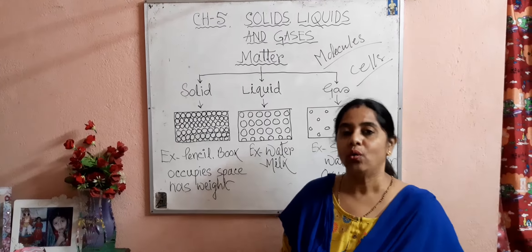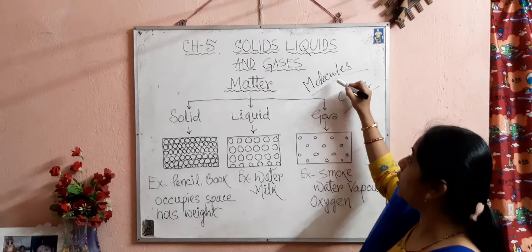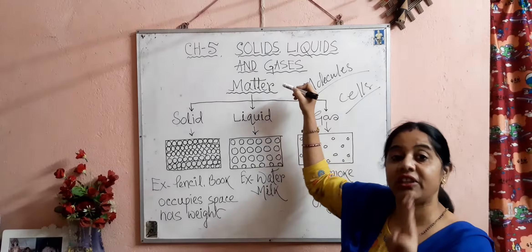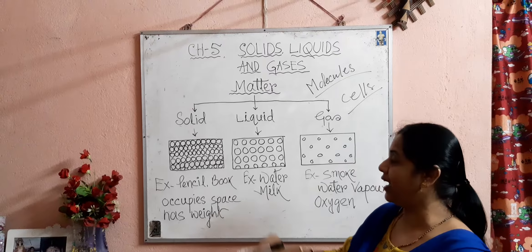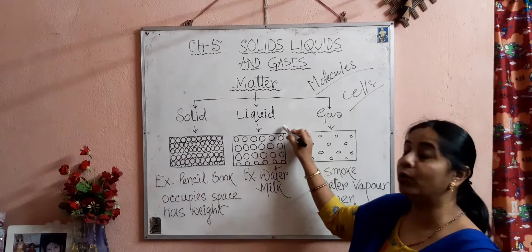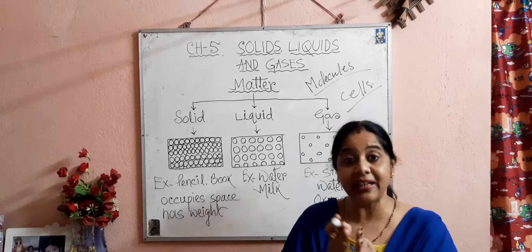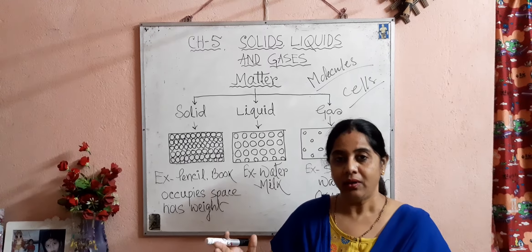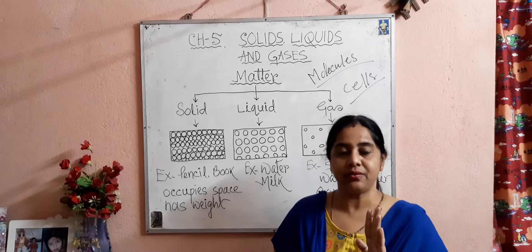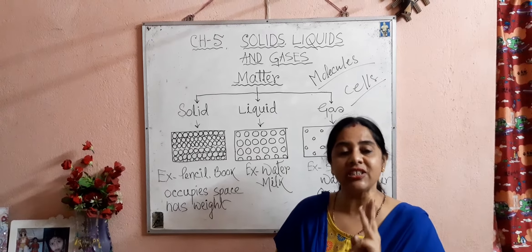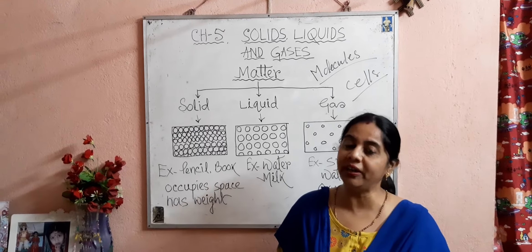The arrangement of these small particles or molecules decides the state of the matter. Depending upon the arrangement of molecules, matter is of three types. They are solids, liquids and gases. Matter has three states or three forms: solids, liquids and gases.